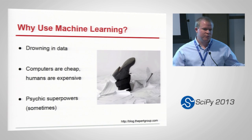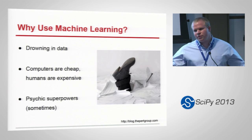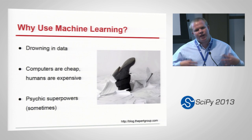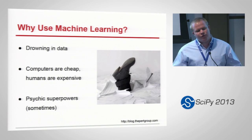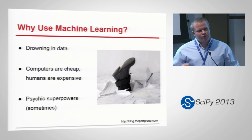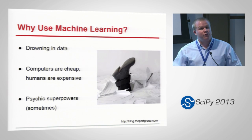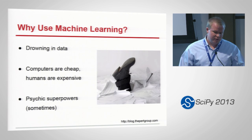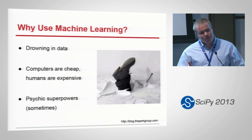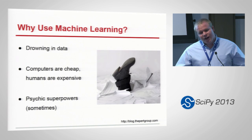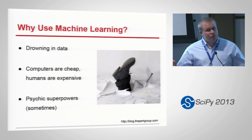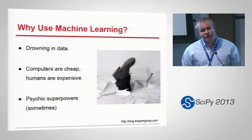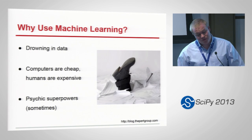Why do we use machine learning? We're drowning in data in this world. The volume of data available is beyond the scale of human comprehension, so it's really important to remember that we have lots of computers. Why not take advantage of that and use it to make better decisions? Computers are cheap. Humans are expensive. An hour of Amazon EC2 GPU cluster time is $2.10 an instance hour — very cheap compared to the hourly cost, even for a grad student.